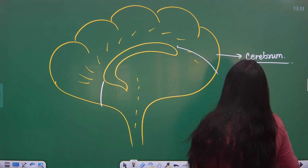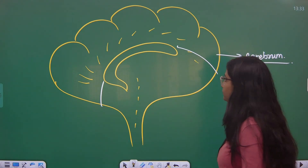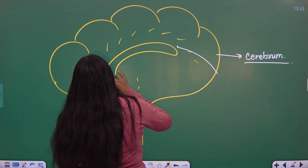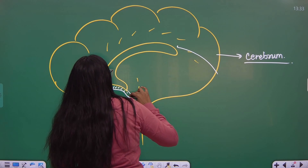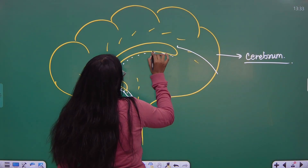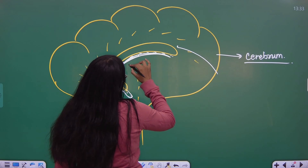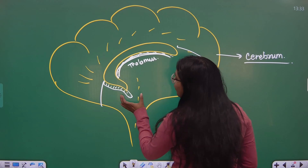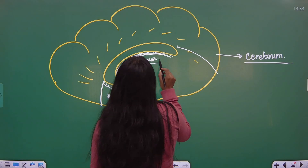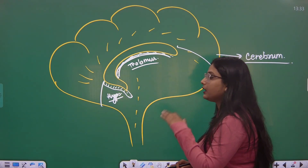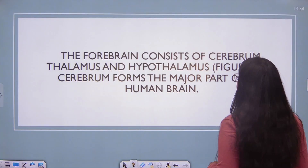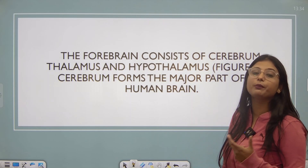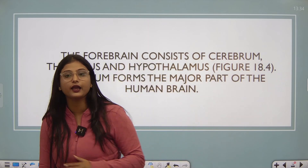Cerebrum is the largest part of the forebrain. Considering hypothalamus and thalamus, there is a small area for hypothalamus, and the base of the cerebrum forms our thalamus. So the forebrain consists of three parts: cerebrum, thalamus and hypothalamus. Cerebrum forms the major part of the human brain.